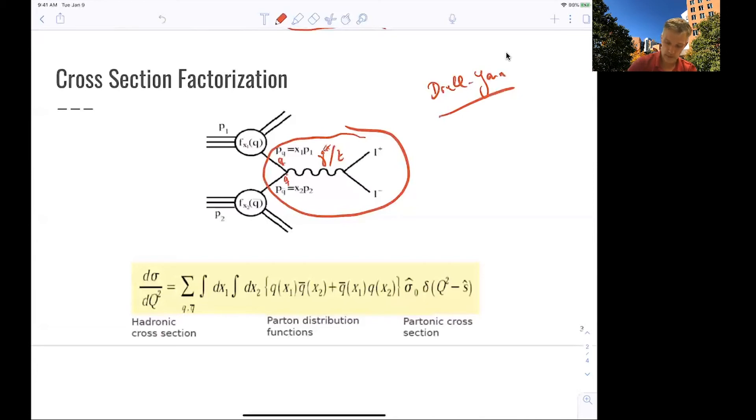So we can calculate this, and we call this cross-section the hard scattering cross-section, cross-section of this hard scattering process. But we need to, in order to calculate this, know the momentum distribution and the abundance of the initial quarks and antiquarks. And so we do this using the parton distribution functions as we discussed before.